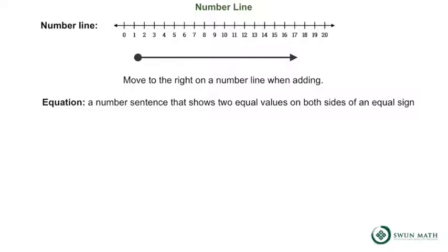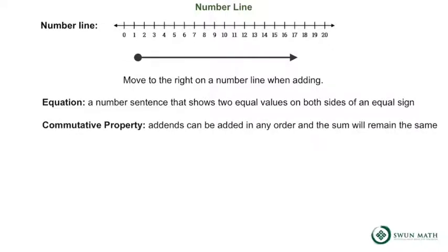Equation: a number sentence that shows two equal values on both sides of an equal sign. Commutative property: addends can be added in any order and the sum will remain the same.